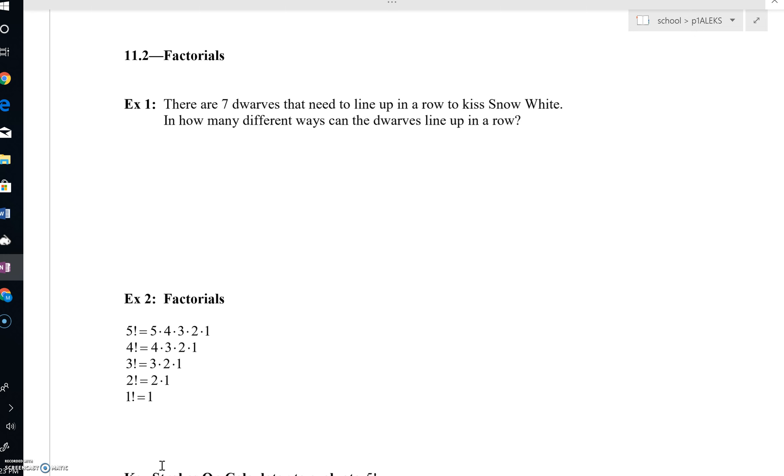Let's look at Example 1 together. There are seven dwarves that need to line up in a row to kiss Snow White. In how many different ways can the dwarves line up in a row? So let's see, they're in a line, so it's 1, 2, 3, 4, 5, 6, 7.